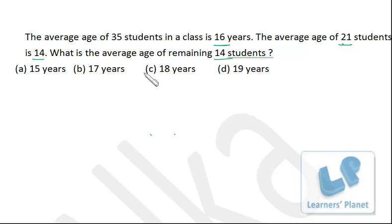What is the average age of remaining 14 students? Now we see the deviation and we'll be getting the sum of deviations, and that should be 0. Average age of 21 student is 14. This is the overall average and this is the average of 21 student. So deviation is minus 2. It is 2 less than the average. So it is minus 2 is the deviation and number of students is 21. So overall deviation is minus 2 into 21.